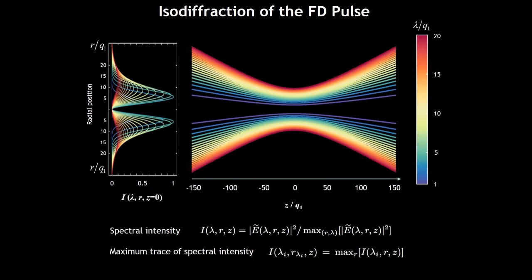The isodiffraction means the various wavelength components diffract at the same rate. The isodiffraction is more clearly demonstrated here. The left figure is the spectral distribution at a transverse plane.